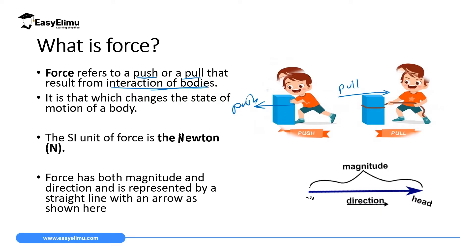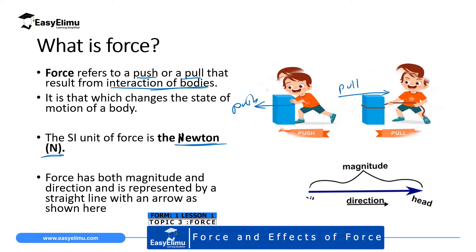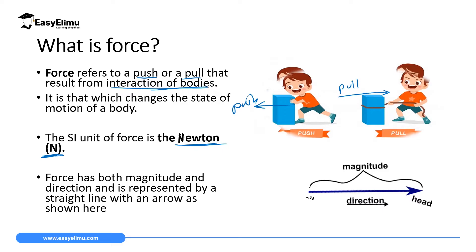The SI unit of force is newton. There is no plural 'newtons' — it is simply newton, and the symbol is capital N. Newton was the person who discovered force — we call him Isaac Newton — that's why the SI unit starts with a capital letter. Force has both magnitude, which is a number we assign to the force, and direction, which we give as north, south, east, west, right, left, front, or back.